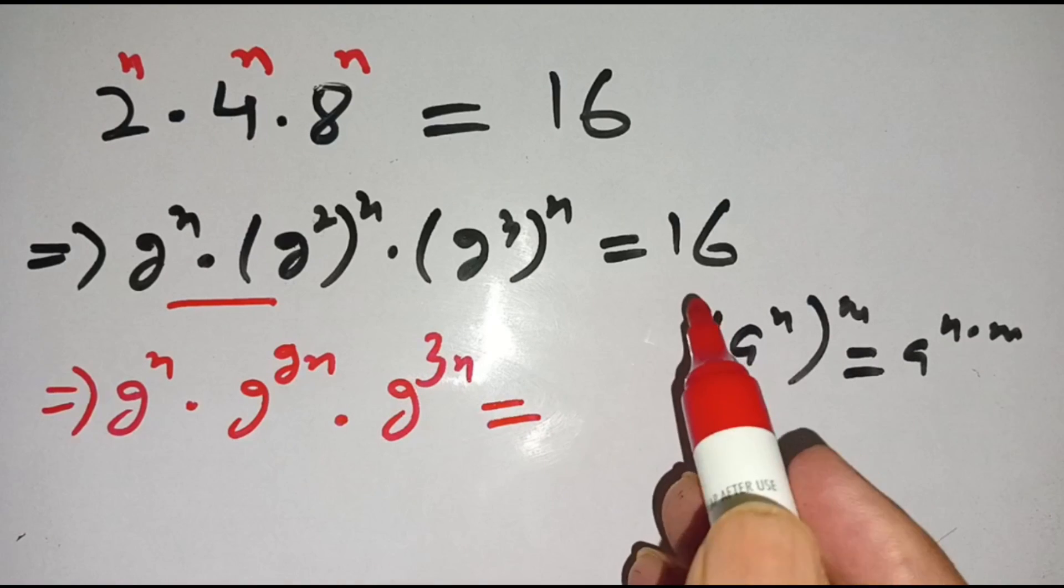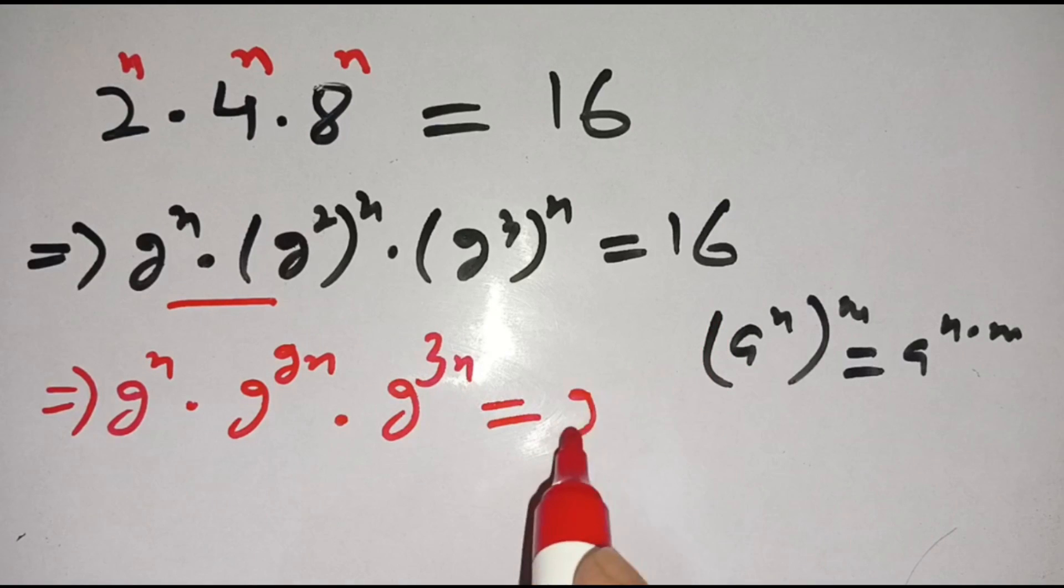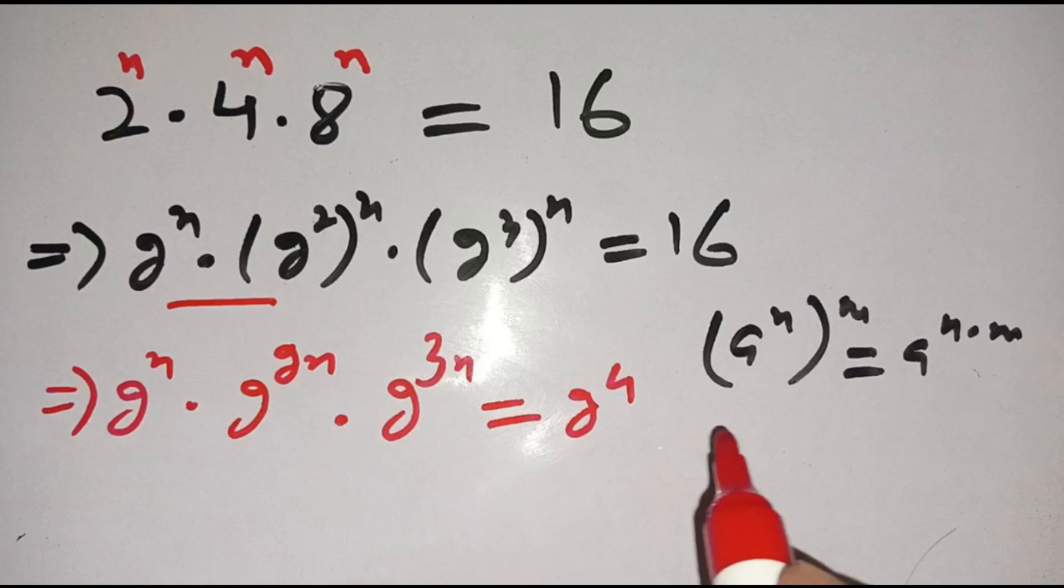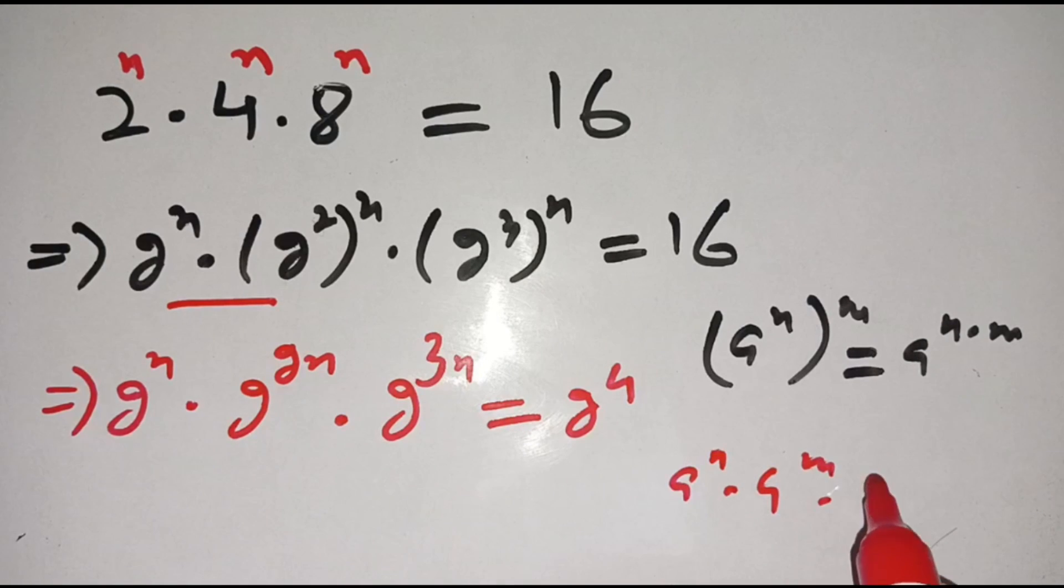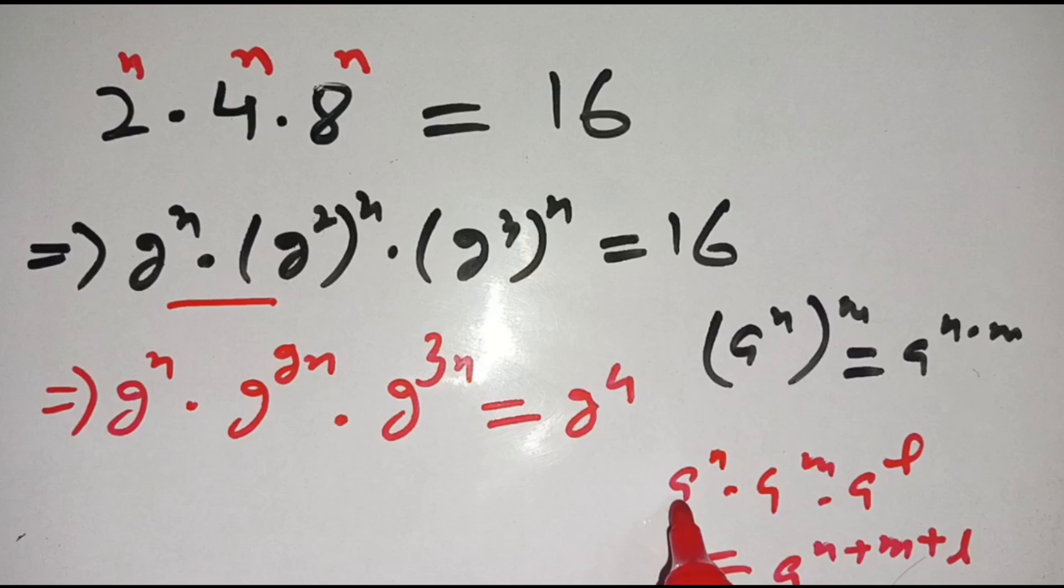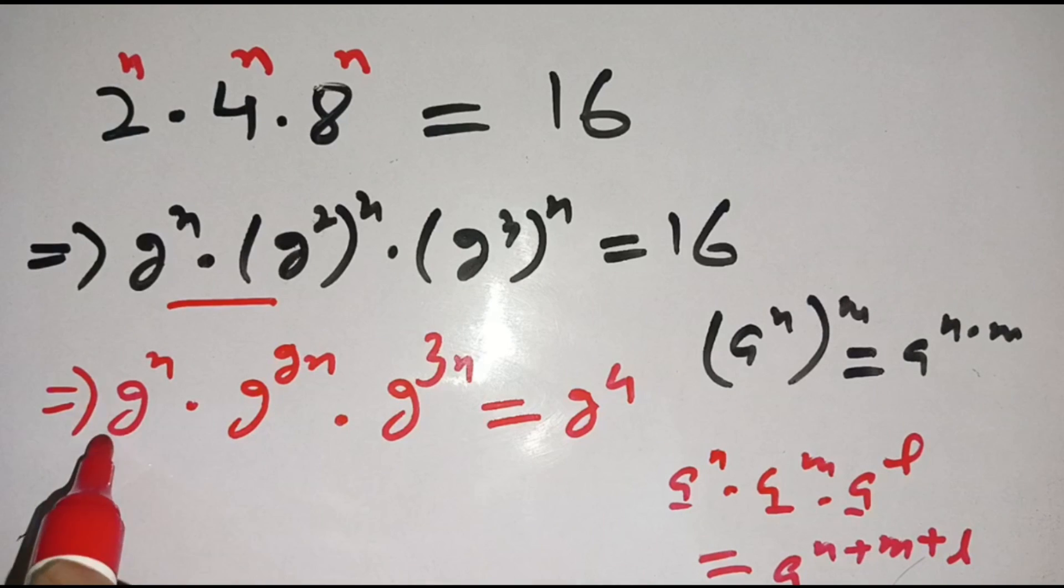And we know that if a^n times a^m times a^l, then it is equal to a^(n+m+l), means that when bases are same, power can be added. Here the base is 2 and powers are different: n, 2n, 3n. Then it can be written as...